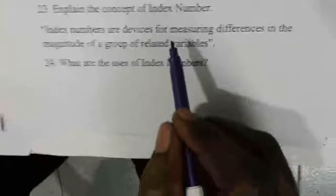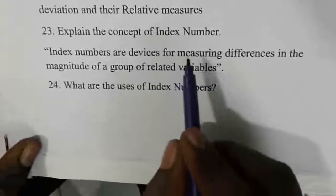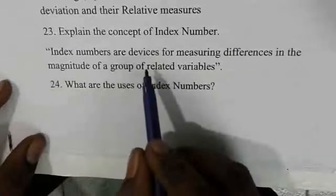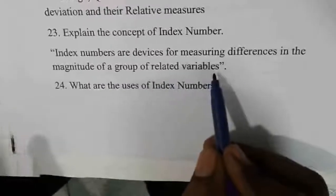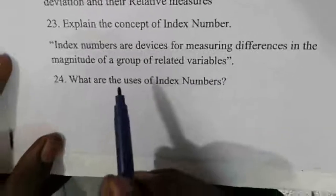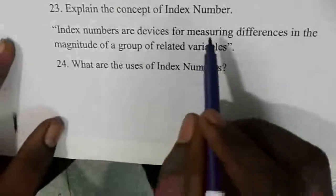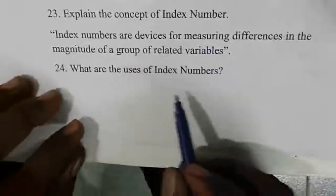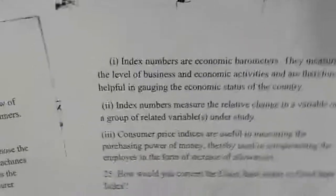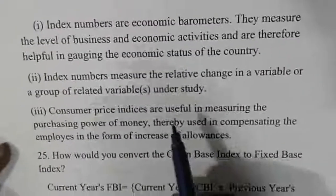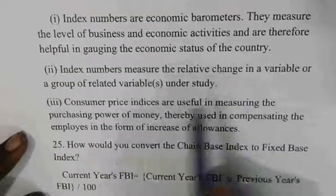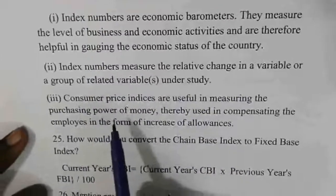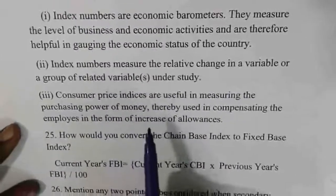Index number is a device for measuring differences in the magnitude of a group of related variables. It is an economical parameter that measures the relative change in a variable and a group of related variables, including the consumer price index.